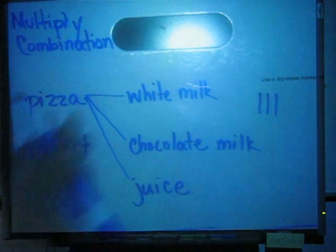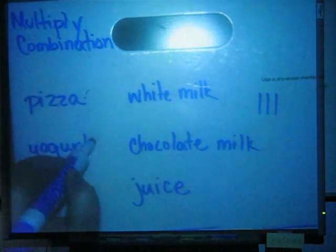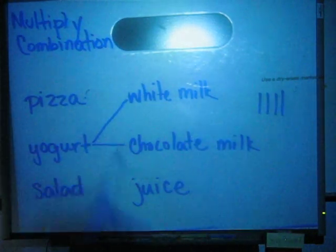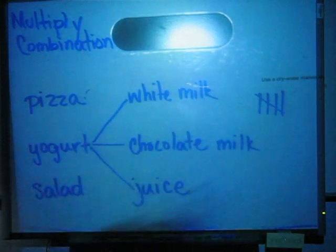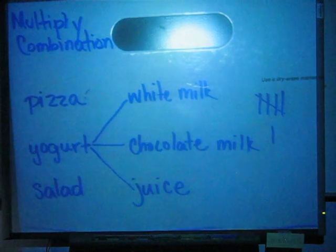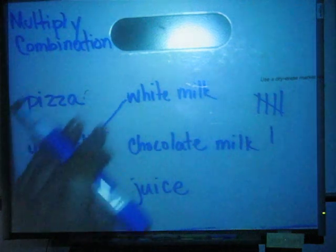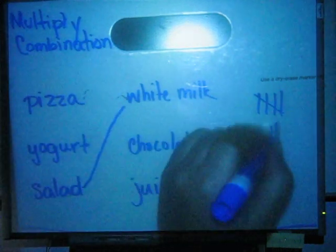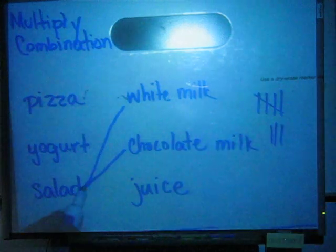Now let's go to yogurt. Yogurt and white milk — that's another combination. Yogurt and chocolate milk — that's another combination. Yogurt and juice — that's another combination. Do you see how many combinations I'm adding up now? It's starting to add up. Now I've done all of my yogurts, so I can go to salad. Salad and white milk is a choice, or salad and chocolate milk, or salad and juice.